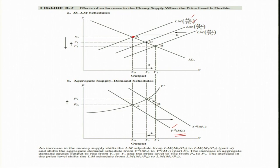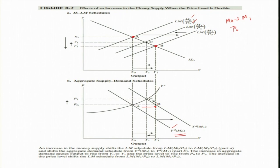If we assume fixed price when money supply increases from M naught to M1, but the price level remains constant, the curve will shift rightwards and the new equilibrium position is going to be B. When we assume price level is the same, the aggregate demand curve shifts from A to B. Due to expansionary monetary policy, aggregate demand has shifted from A to B — from Y naught to Y1 — representing an increase in aggregate demand, delta Y.